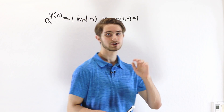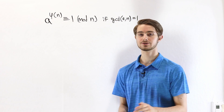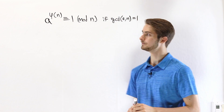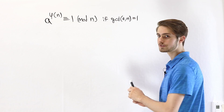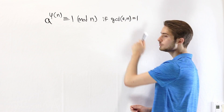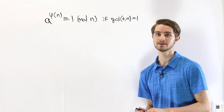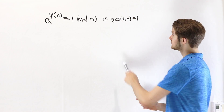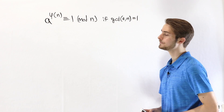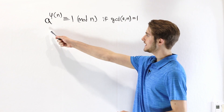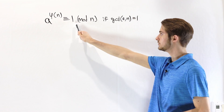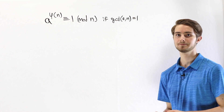We are going to talk about Euler's Totient Theorem and Fermat's Little Theorem. Euler's Totient Theorem is the statement that if a is coprime to n — in other words, if the greatest common divisor of a and n is 1 — then a to the power of φ(n) is congruent to 1 mod n.